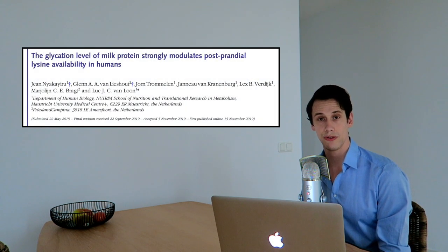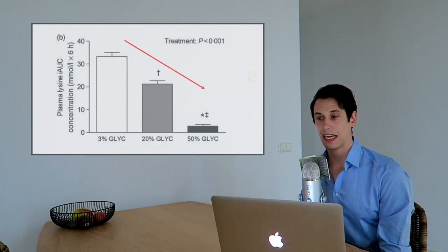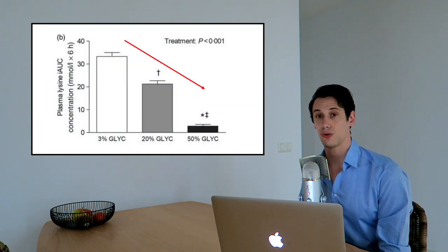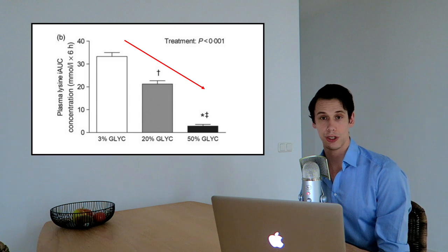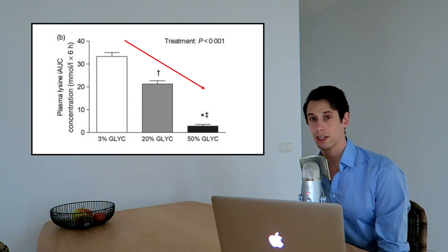For example, we recently performed a study in which we used glycated protein. And glycation is a process that can occur during protein storage. And we saw that the glycation of a protein drastically reduced the absorption of one of the amino acids, lysine.